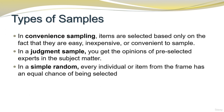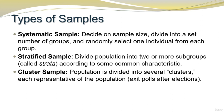Types of samples: In convenience sampling, items are selected based only on the fact that they are easy, inexpensive, or convenient to sample. In a judgment sample, you get the opinions of pre-selected experts in the subject matter. In simple random sampling, every individual or item from the frame has an equal chance of being selected. A systematic sample has you decide on sample size, divide into a set number of groups, and randomly select one individual from each group. A stratified sample divides the population into two or more subgroups called strata according to some common characteristic. A cluster sample divides the population into several clusters, each representative of the population.